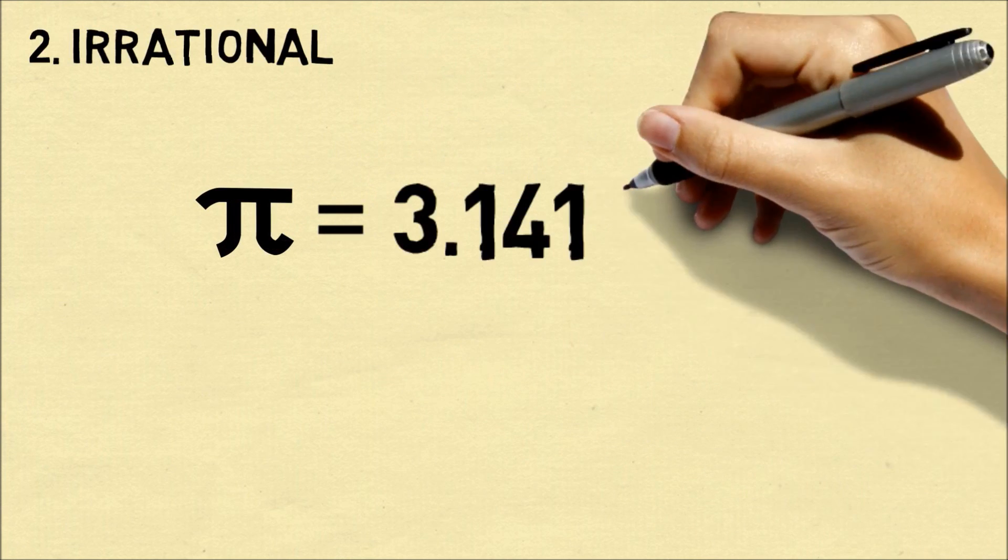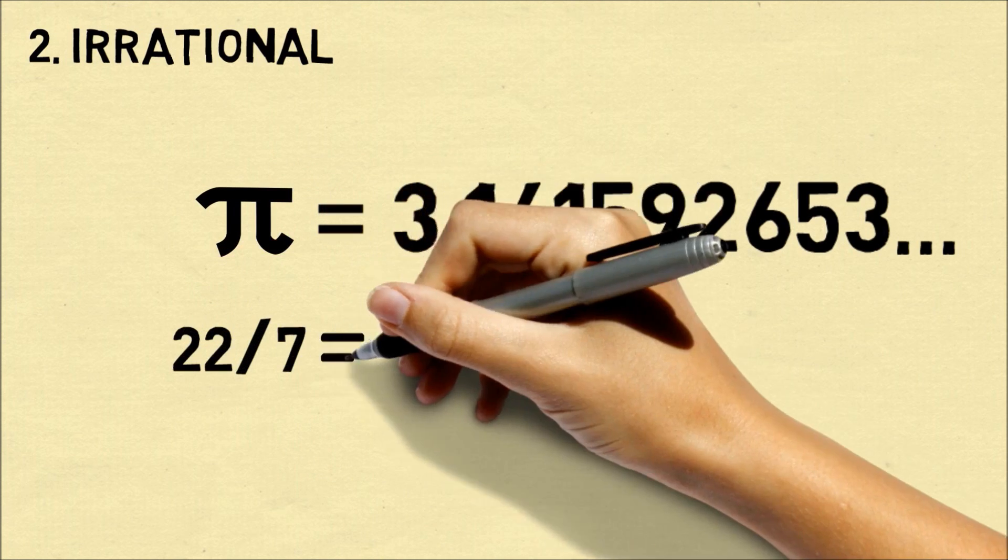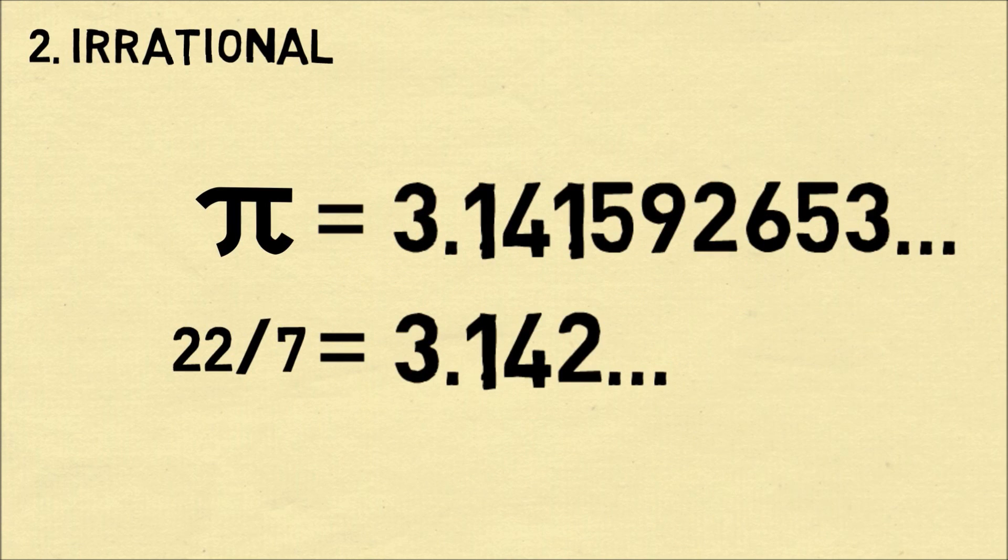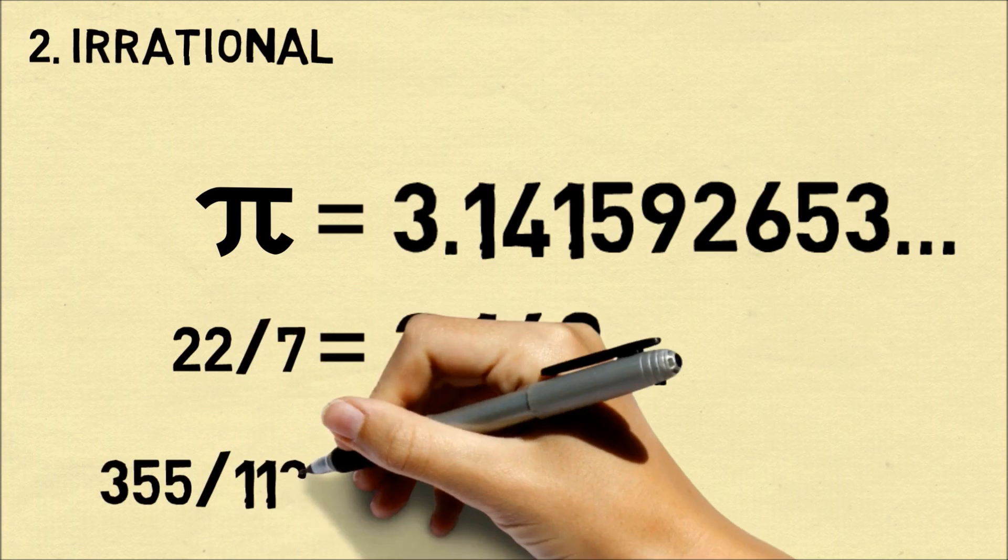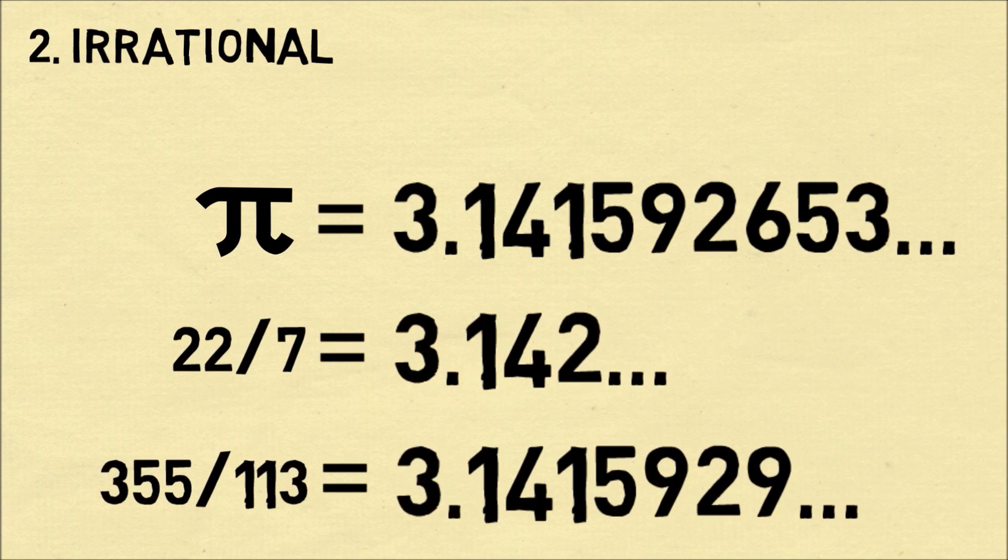Fact number two, pi is irrational. Pi is equal to approximately 3.141592653 and so on. The decimal form continues on forever and it never repeats. The fraction 22 over 7 is accurate to two decimal places and the fraction 355 over 113 is accurate to six decimal places.